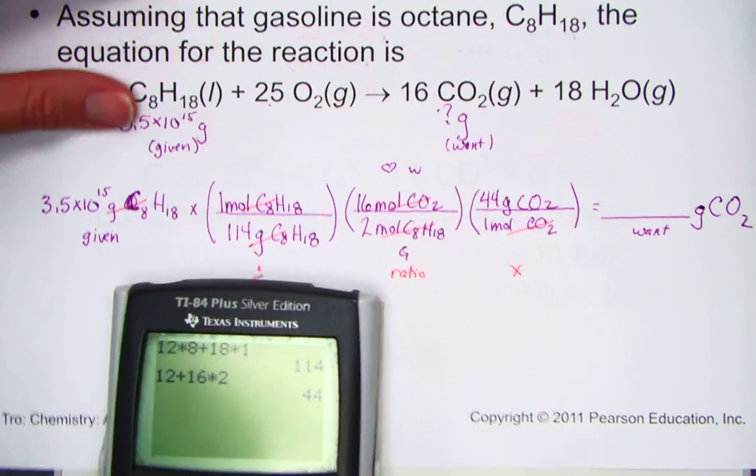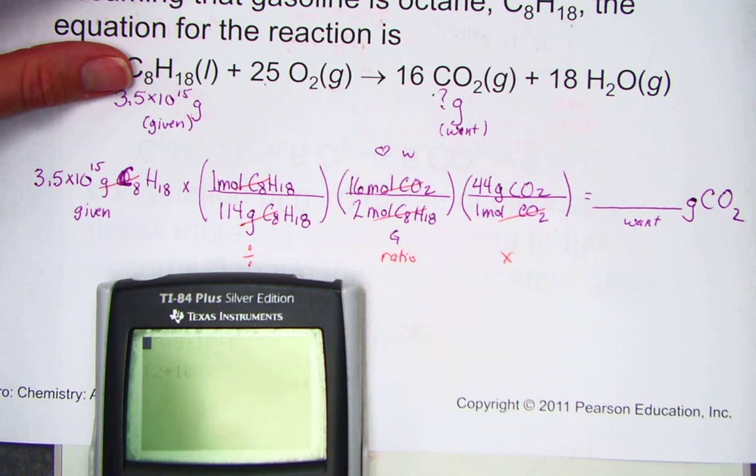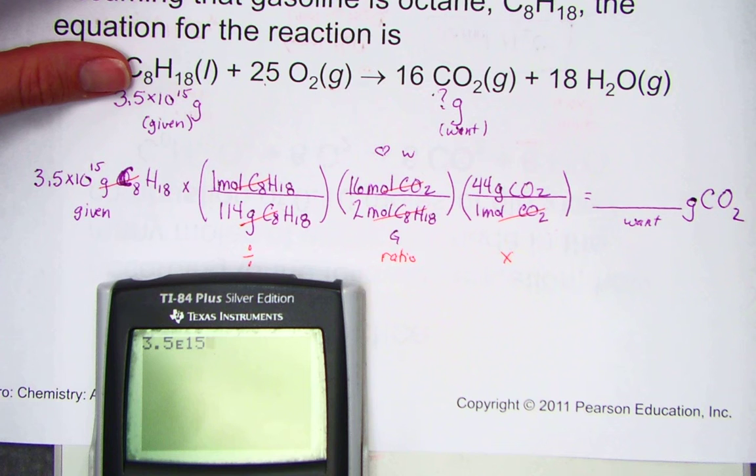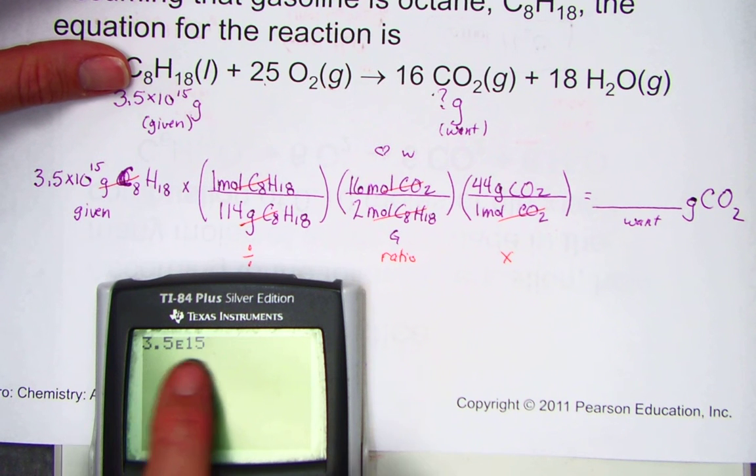On our calculator, start by typing 3.5e to the 15th. That's red on our screen is 3.5 times 10 to the 15th power. We do not hit times 10 to the caret key. We use the scientific notation key. 3.5 times 10 to the 15th looks like this on your screen, 3.5e15.